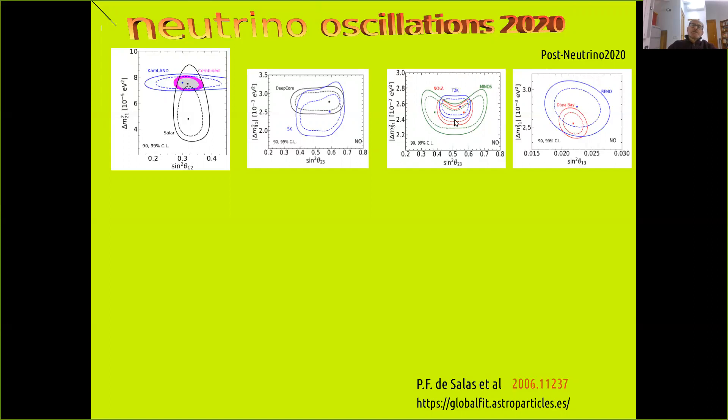These experiments have not only confirmed the oscillations but also improved the parameter determination. Here you see, for example, atmospheric oscillation parameters as determined in the long baseline accelerator experiments, for example T2K and NOvA, and also the determination of theta one-three at Daya Bay and RENO.